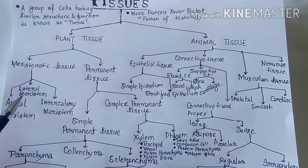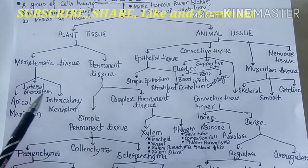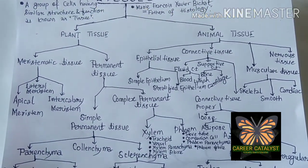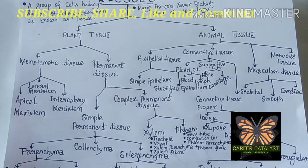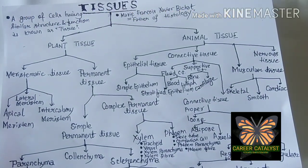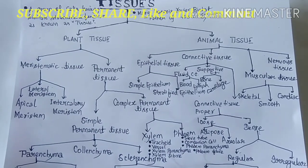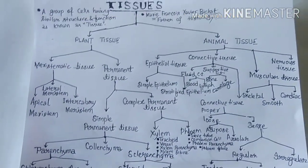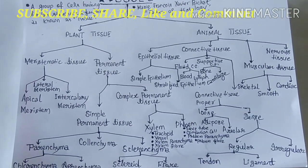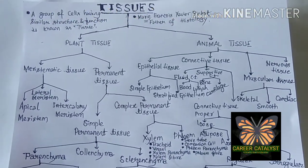Meristematic tissues — also called meristem or growing tissues — are temporary tissues. They are subdivided into three categories: apical meristem, lateral meristem, and intercalary meristem. Apical meristem is present in the apical parts or tips of the roots and shoots of the plant body.